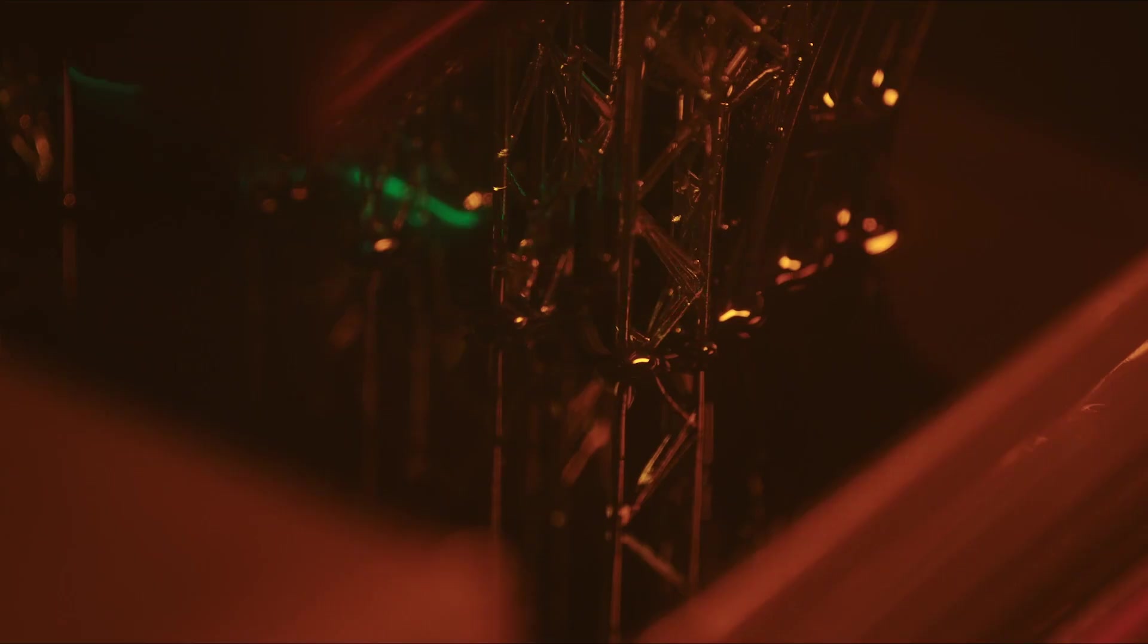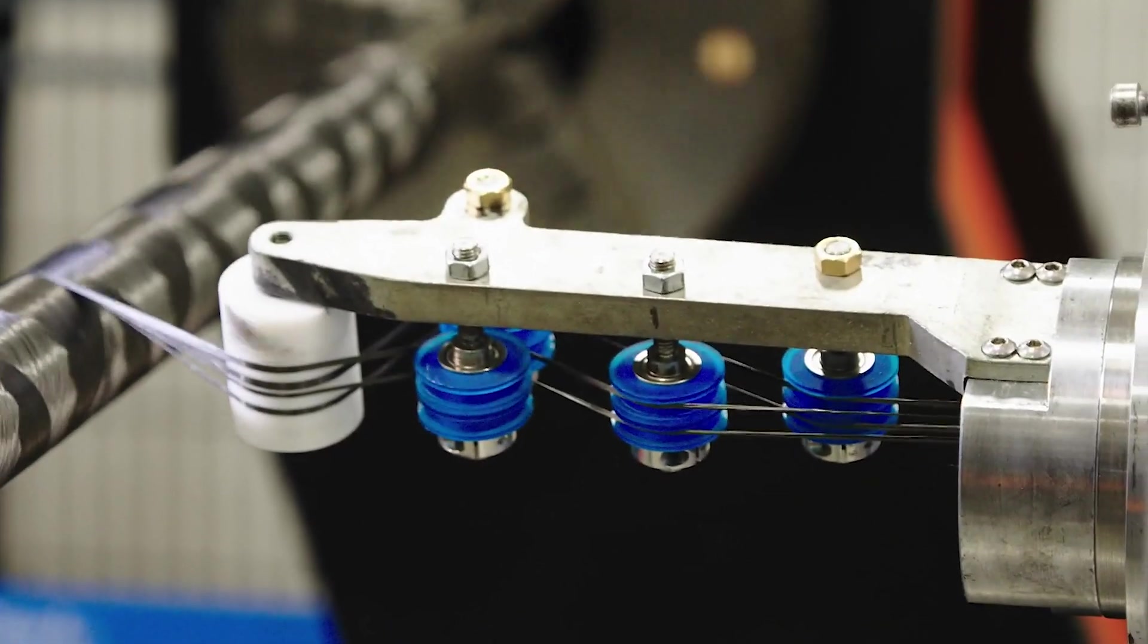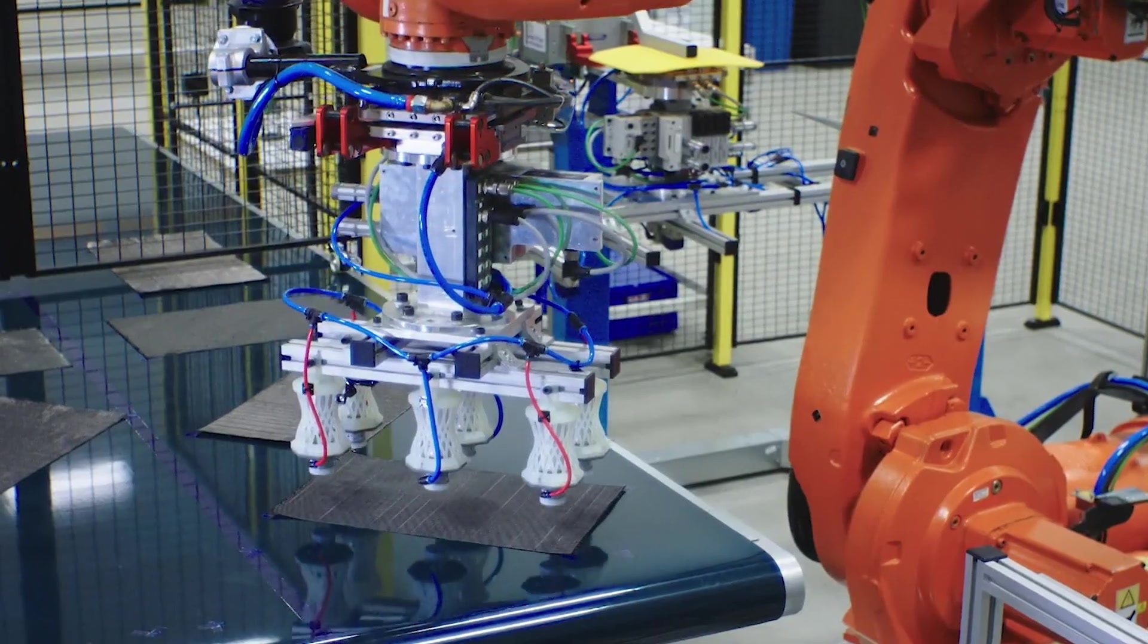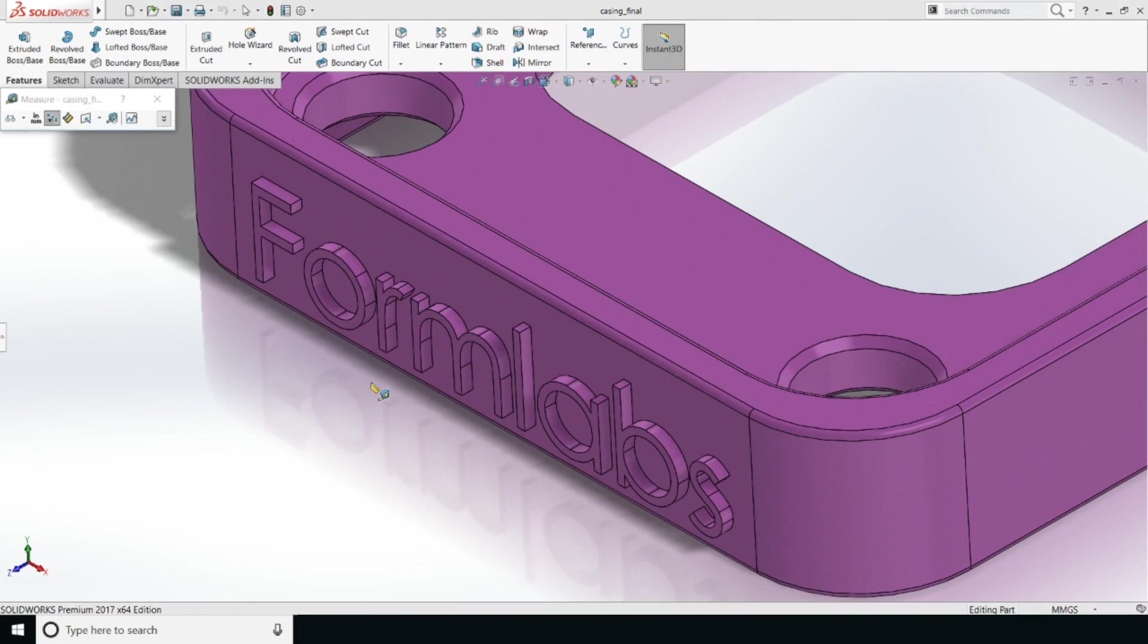3D printing is a great way to create vacuum forming molds and tooling due to its speed, low cost, and ability to produce a wide range of geometries. Fine features like text or surface textures are time-consuming to machine but simple to add to a CAD file for printing.